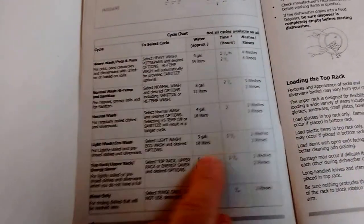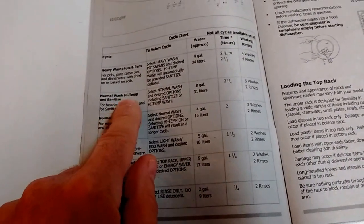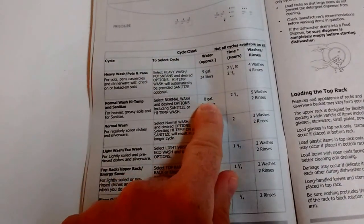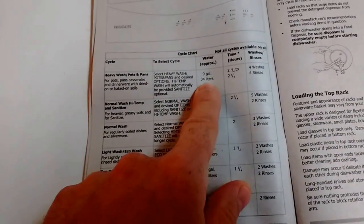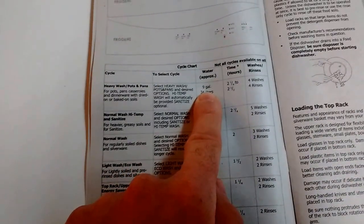Now that's a big savings over the normal cycle which uses eight gallons of water and runs for two and a quarter hours. And of course there's the heavy option which uses nine gallons and runs for almost two and a half hours.